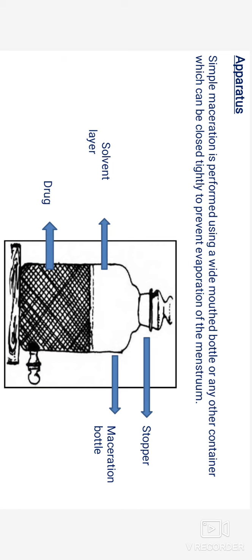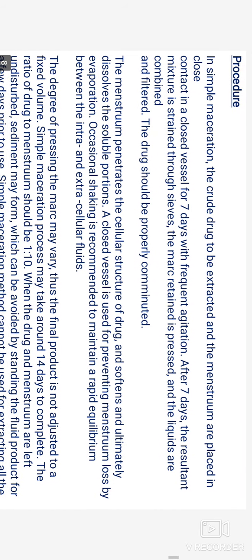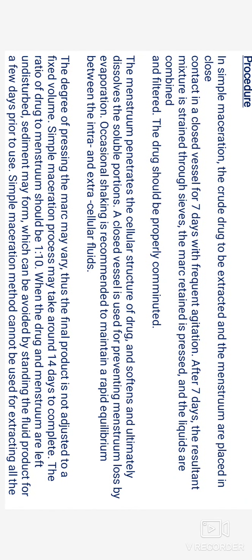The apparatus used for simple maceration: simple maceration is performed using a wide-mouth bottle or any other container which can be closed tightly to prevent evaporation of the menstruum. Procedure of simple maceration: the crude drug to be extracted and the menstruum are placed in close contact in a closed vessel for 7 days with frequent agitation. After 7 days, the resultant mixture is strained through sieves. The marc retained in the sieves is pressed and the liquids are combined and filtered. The drug should be properly comminuted.